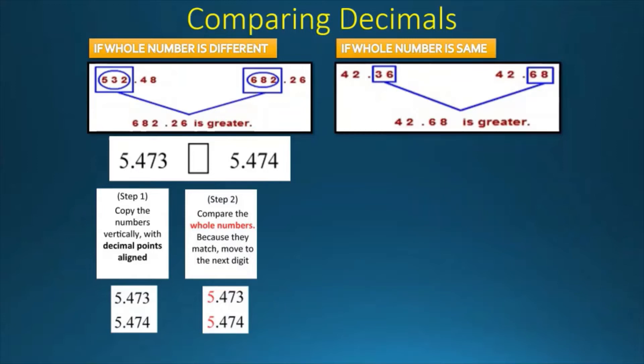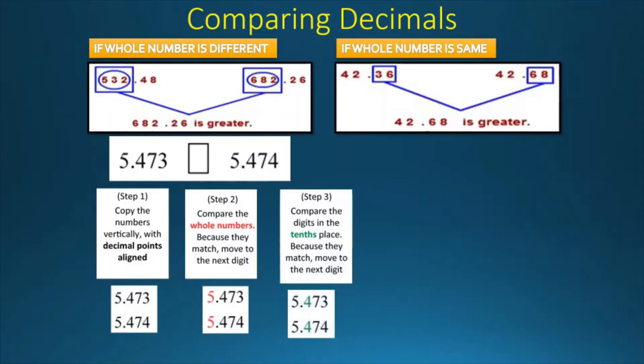Now step 3 is to compare the digits in the tenths place. If they match, then move on to the next digit again. And now the tenths digit is 4, so they both match.